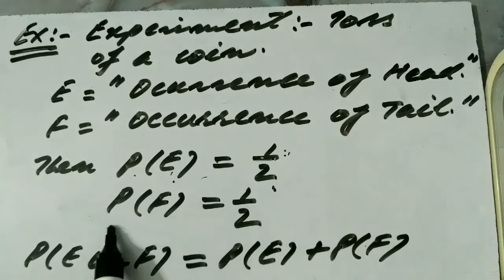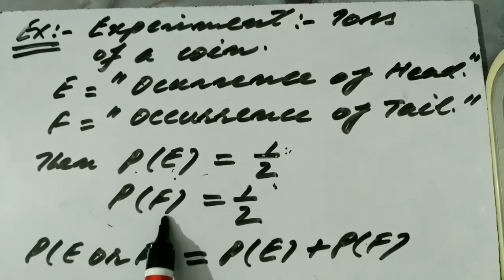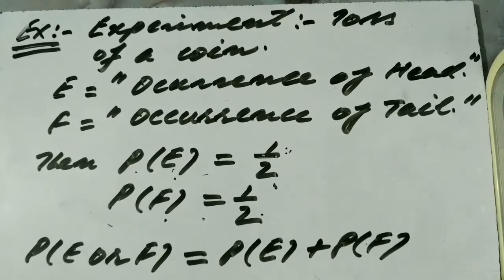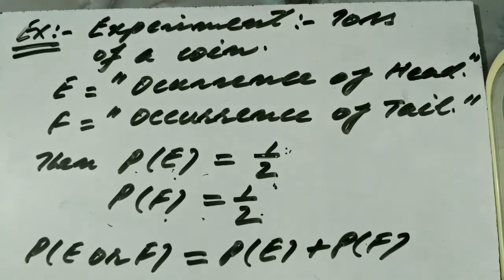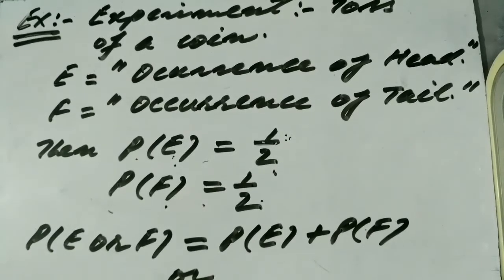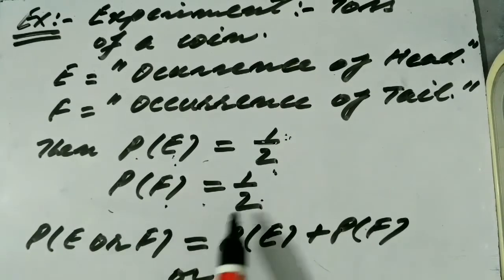Similarly, P(F), the probability of occurrence of tail, is also half, because there is only one favorable outcome for the event occurrence of tail, and the total number of possible outcomes — head and tail — is only two. So out of two possible outcomes, one is favorable. Therefore P(F) is also one upon two.